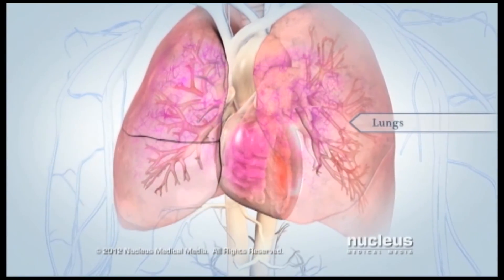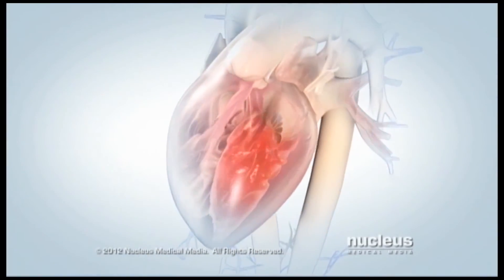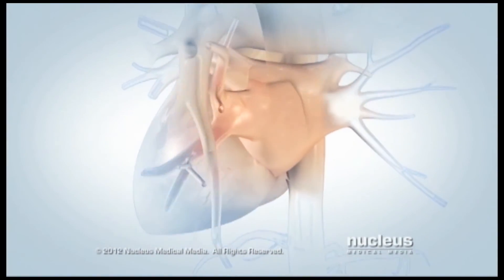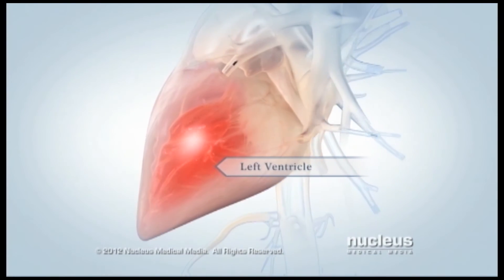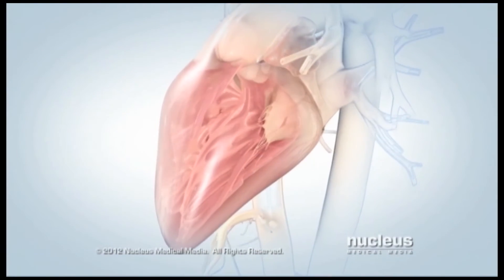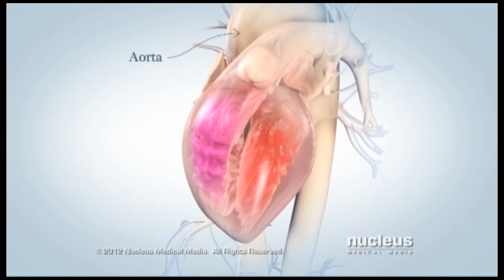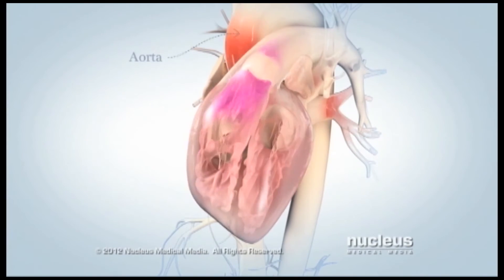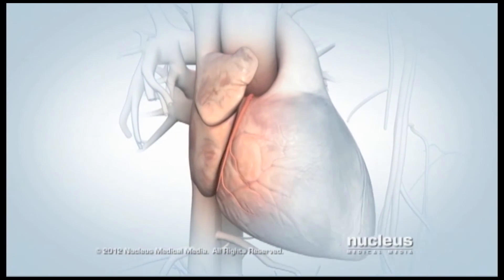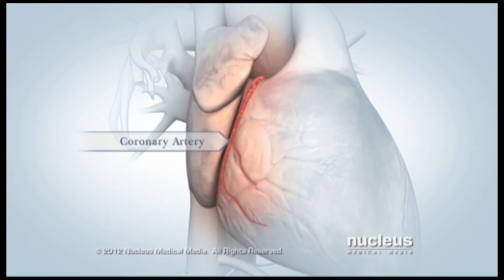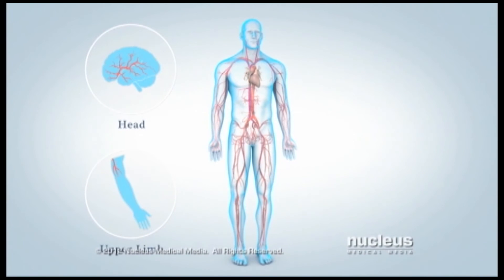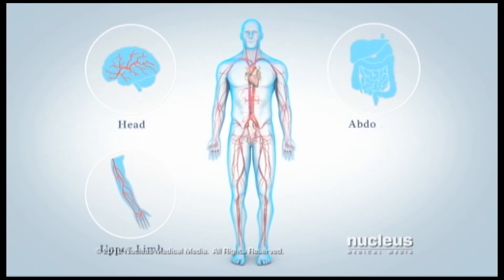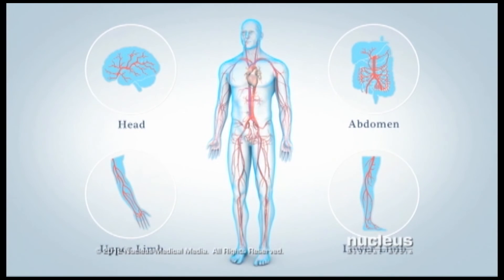Blood is sent through the aorta to feed your cells and tissues. The first branches off your aorta are the coronary arteries, which supply your heart muscle with oxygen and nutrients. At the top of your aorta, arteries branch off to carry blood to your head and arms. Arteries branching from the middle and lower parts of your aorta supply blood to the rest of your body.